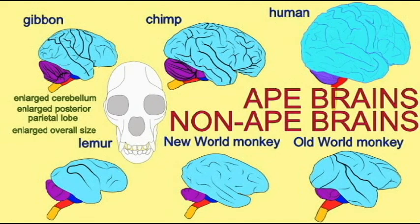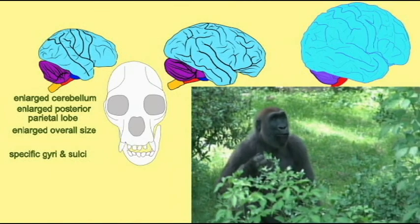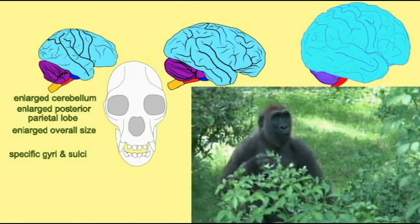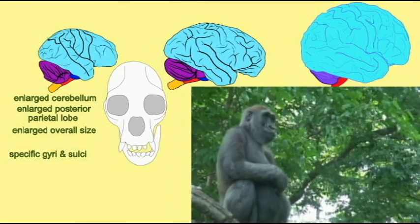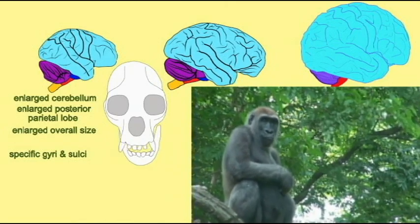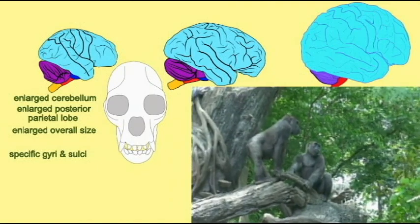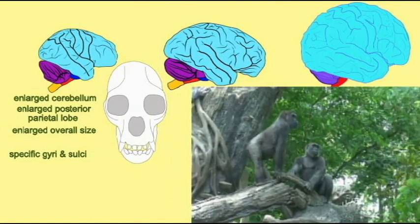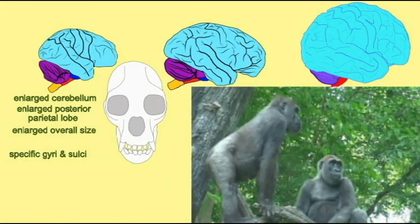There are a number of folds — gyri and sulci — which all apes share but which monkeys lack. And some behaviors of apes are not yet known in monkeys. The ability to recognize one's own reflection in a mirror as being self is an ape feature among the primates. The ability to learn sign language, at least to some degree, is also a feature of ape brains. So apes share a number of anatomical and functional features of the brain.